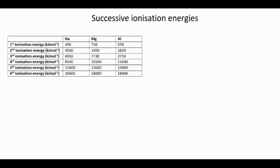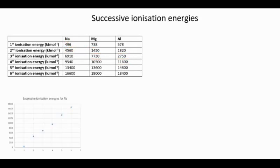So the successive ionization energies for sodium — firstly, in that left column, they always increase. But from the first to second ionization energy, it jumps up by about 4,000, and then it starts going up by about 2,500. So the big jump is between the first and second. With magnesium, there's a big jump between the second and third ionization energy of about 6,000. And for aluminium, there's a jump of about 9,000 between the third and fourth ionization energy.